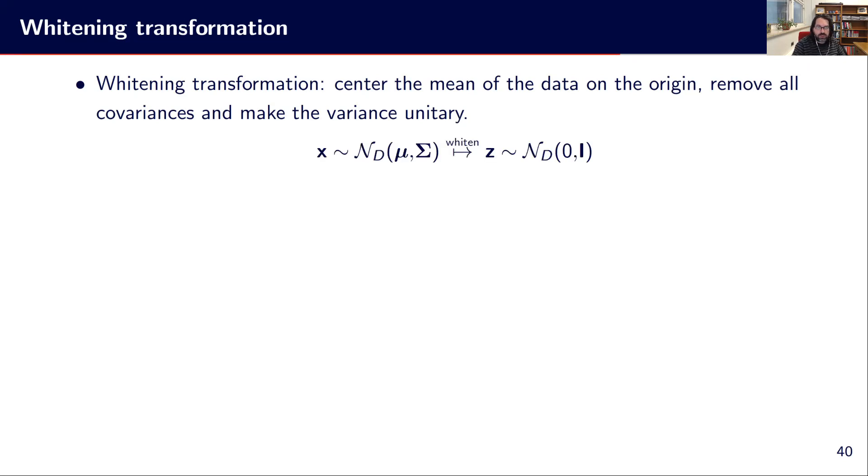If we say that we have some data following a d-dimensional multivariate normal distribution characterized by μ and Σ, if we apply a whitening transformation, we will get a z that is following this multivariate distribution centered on the origin of unit variance.